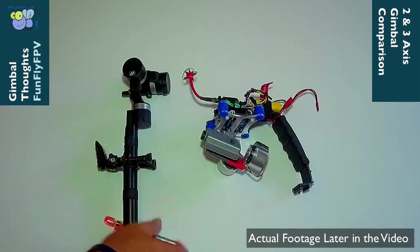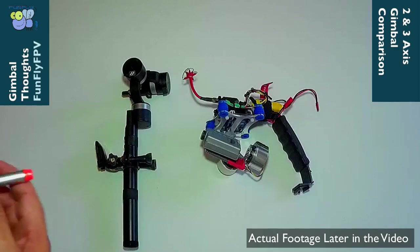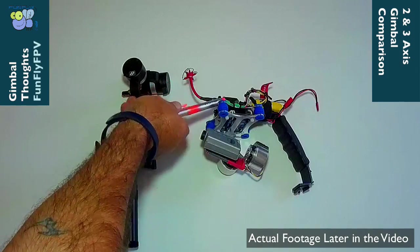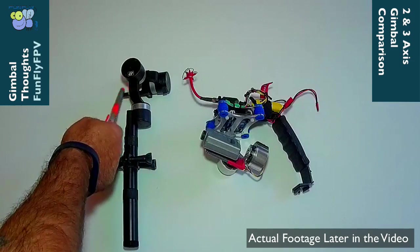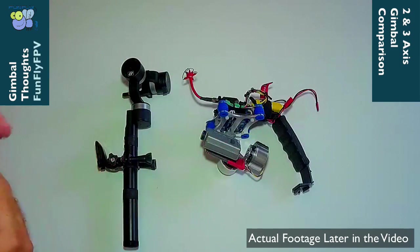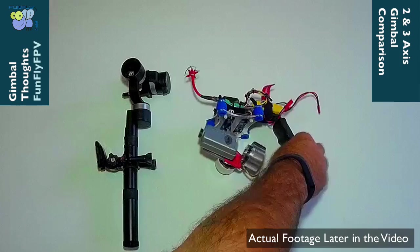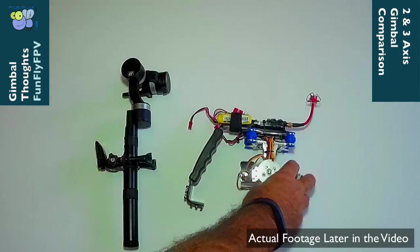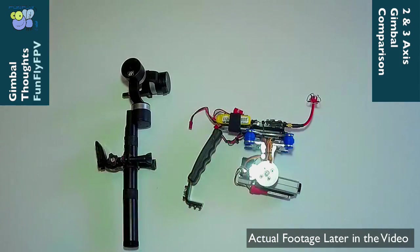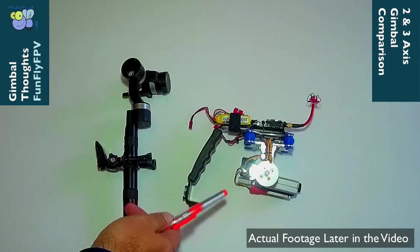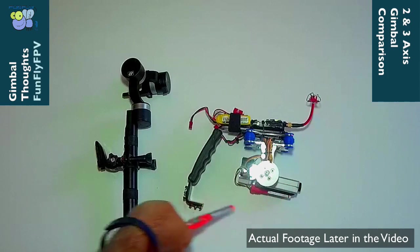But of course this one has some disadvantages. It doesn't have the FPV transmitter, and this is really just for photography. This guy takes it one step further and adds the FPV transmission, and you can record at the same time on the Mobius.